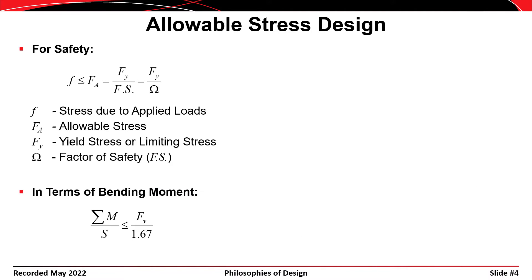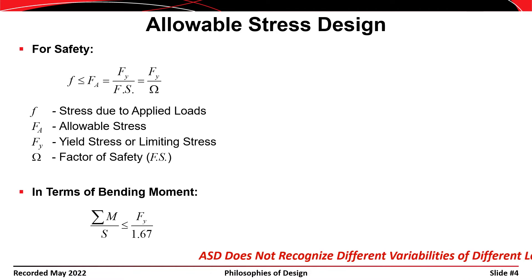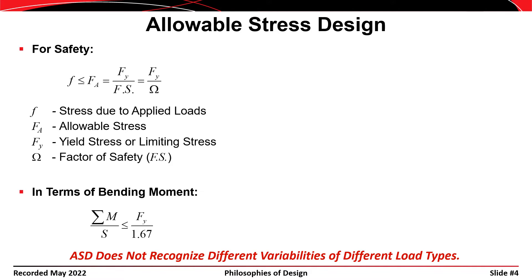In terms of bending moment, the sum of the moments applied to the section divided by the section modulus must be less than or equal to the yield stress divided by five-thirds. Five-thirds is a common factor of safety in the design of steel structures. Allowable stress design doesn't recognize the different variabilities of the applied loads or the variability of the resistance that the members have, and that's a significant limitation.